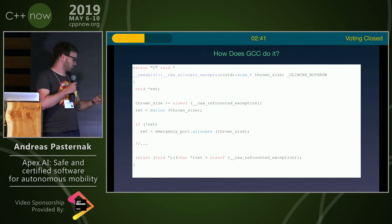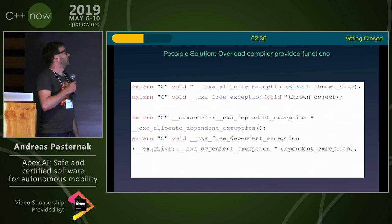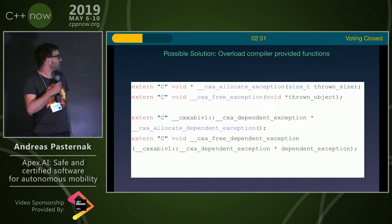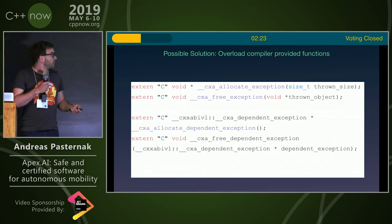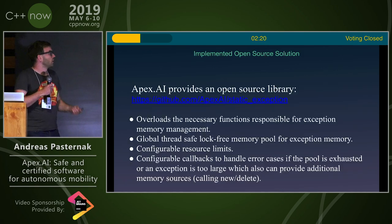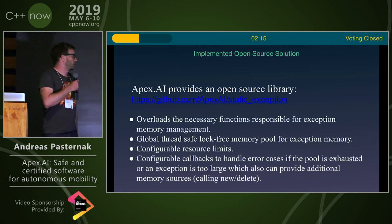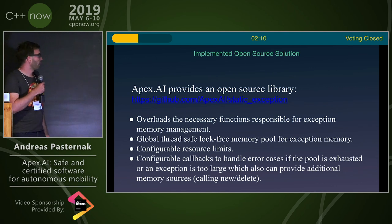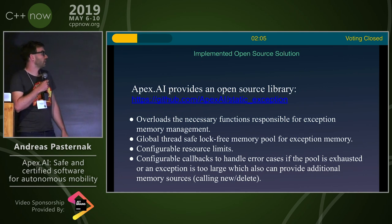Yes, there is a way to change the behavior. Basically, we can replace these compiler-provided functions. In the end, we need to replace four functions: allocate and free exception, and also allocate and free the dependent exceptions. These dependent exceptions are used when you use exception pointers. To help you guys with that, we actually created an open-source library that does exactly that — it replaces these necessary functions. It's basically just a library that you link to your code.